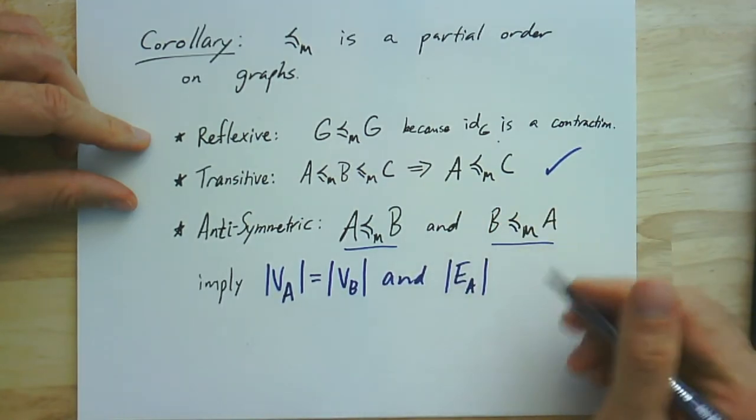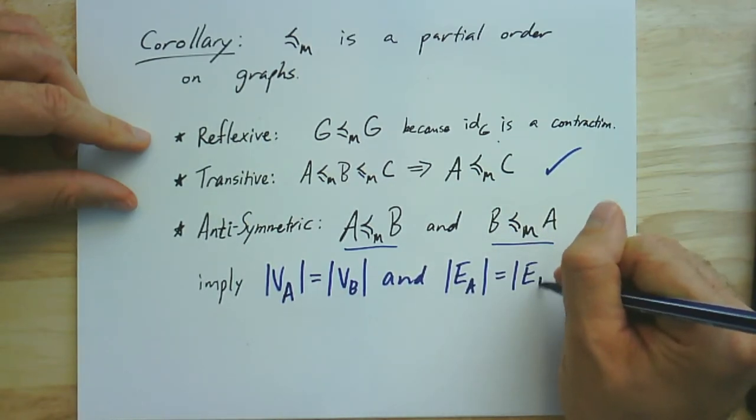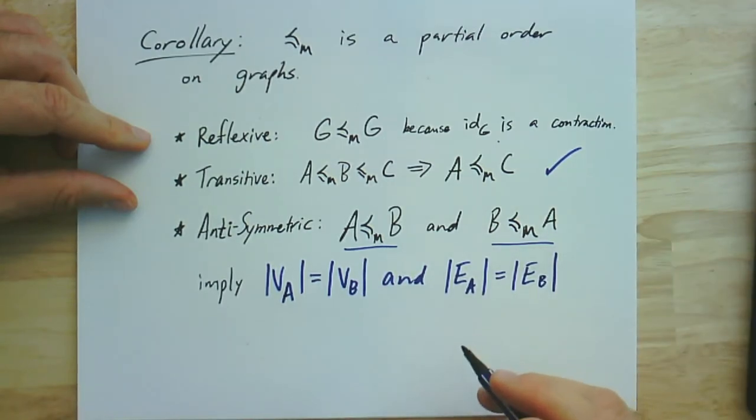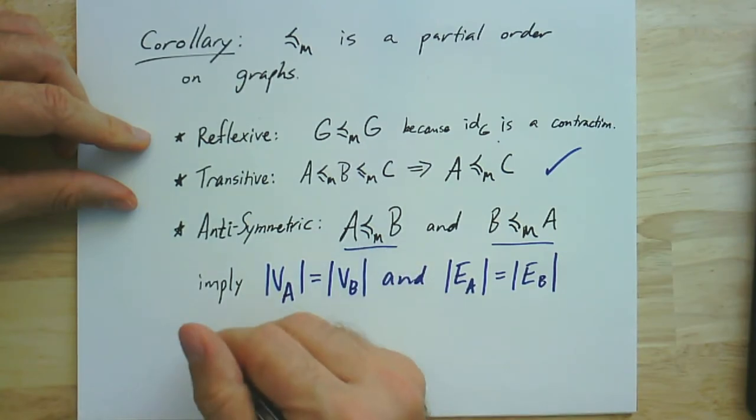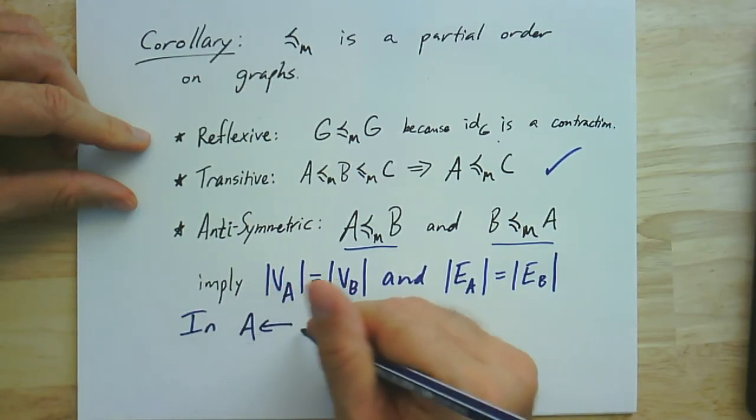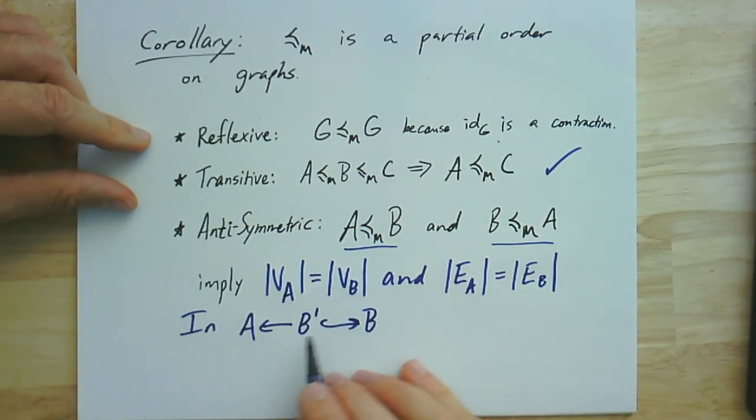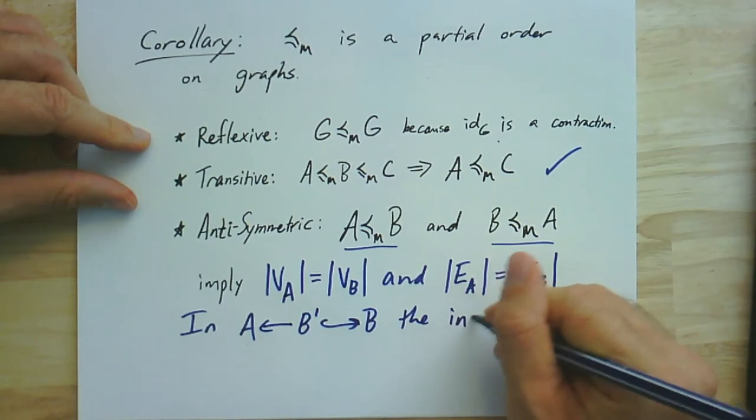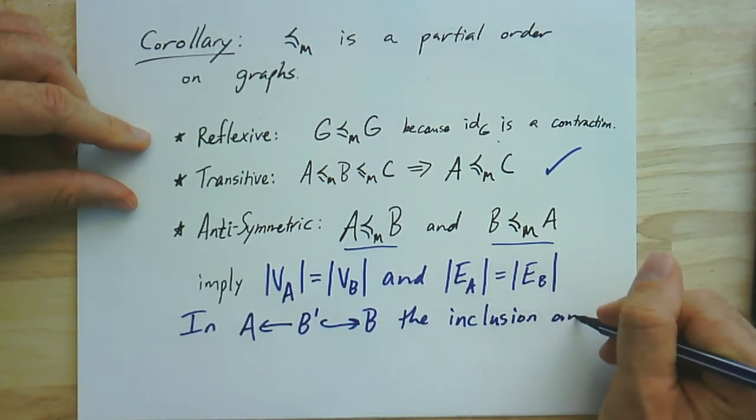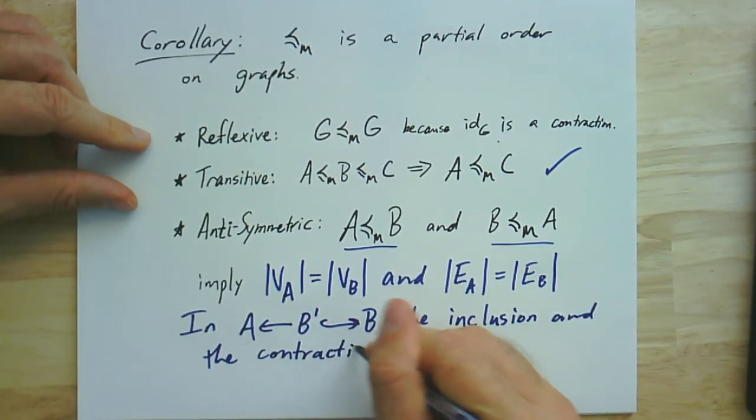So we know at least that they, if they have this relationship, then they have the same number of vertices and the same number of edges. It's also going to be the case that if I break apart the definition here, it's saying that in this pair of maps and the subgraph B prime, and so I have a subgraph of B that contracts to A, that's what it means to be a minor, the inclusion and the contraction have to be bijections.